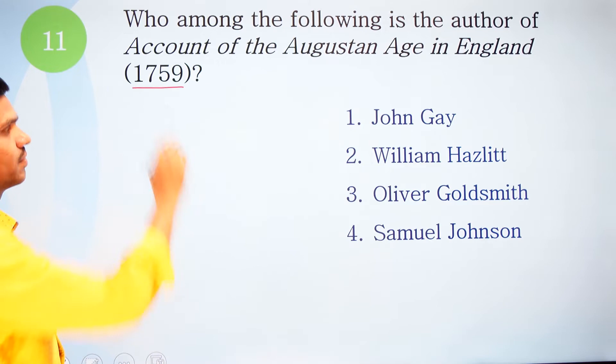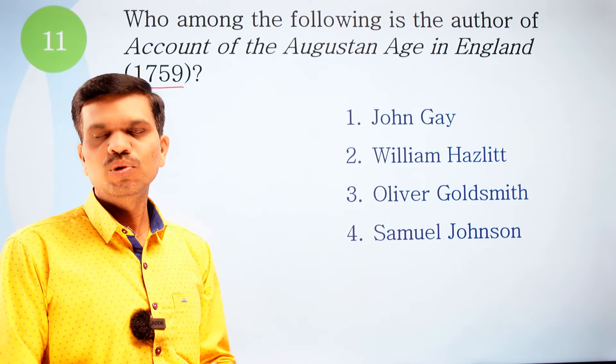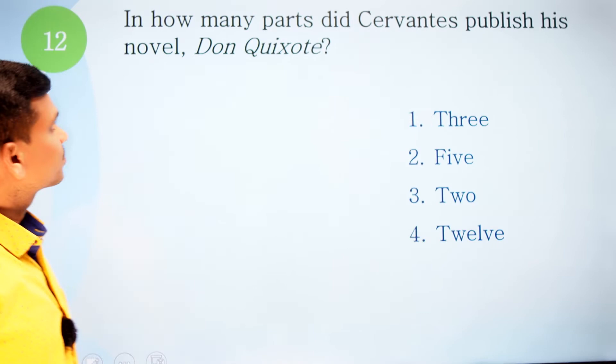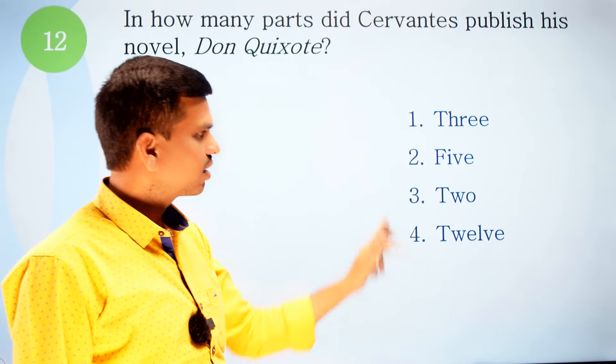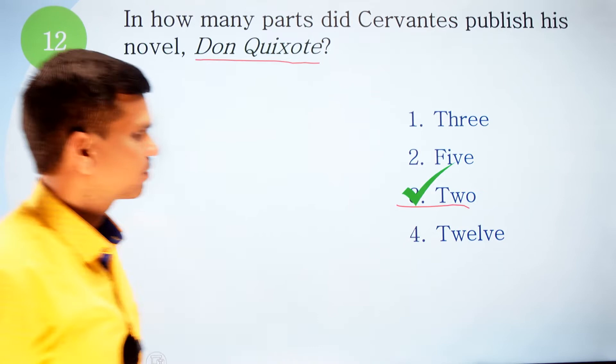Question eleven: Who is the author of 'Account of the Augustan Age in England' (1759)? Options: one, John Gay; two, William Hazlitt; three, Oliver Goldsmith; four, Samuel Johnson. The correct option is Oliver Goldsmith, who is basically famous for his novel 'The Vicar of Wakefield.' Question twelve: In how many parts did Cervantes publish his novel 'Don Quixote'? Options: one, three; two, five; three, two; four, twelve. The correct option is two parts.